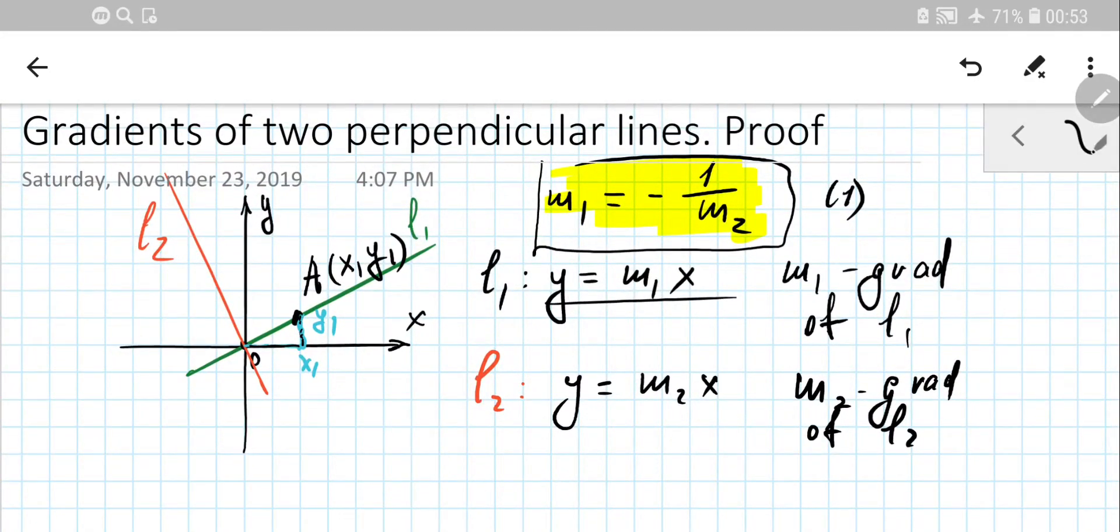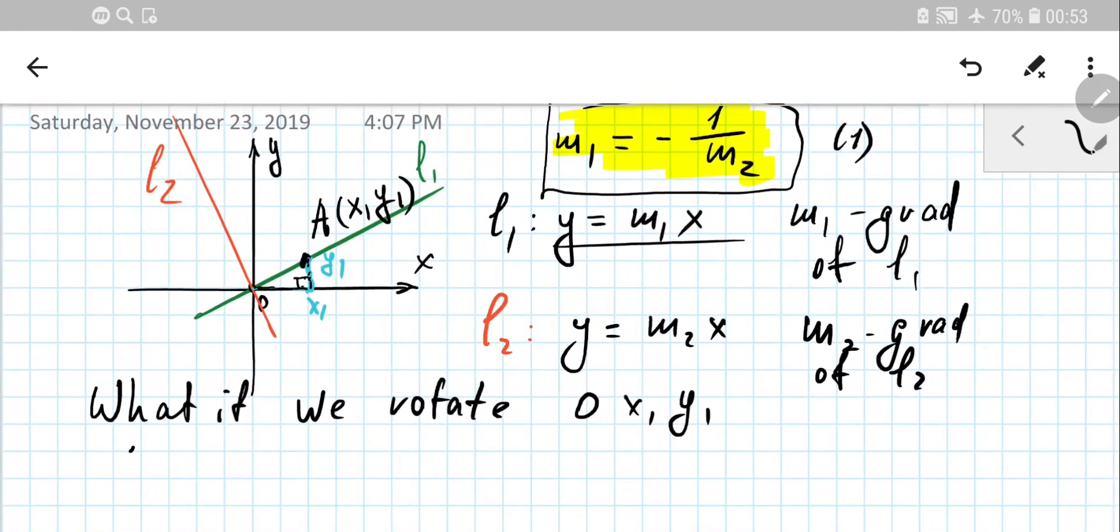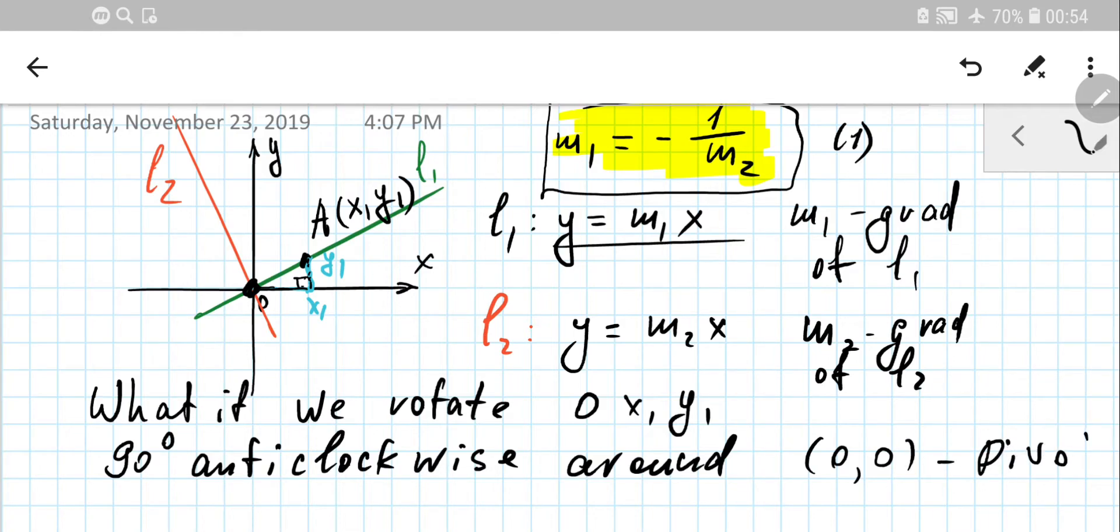So now it's right time to remember transformation of rotation. What if we rotate our triangle O, x1, y1? This is right angle. What if we rotate 90 degrees around or about a pivoting point which is in the origin? So around simply (0,0). That's the pivot or pivoting point.